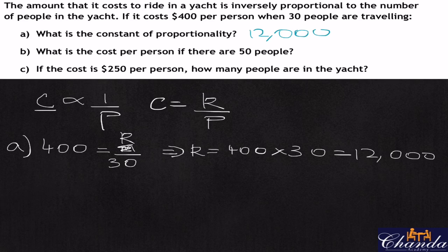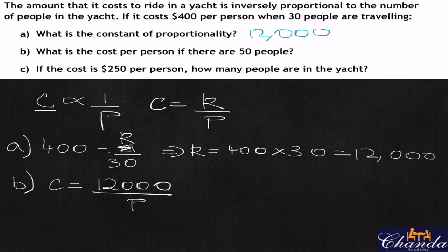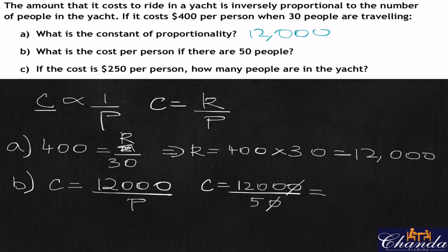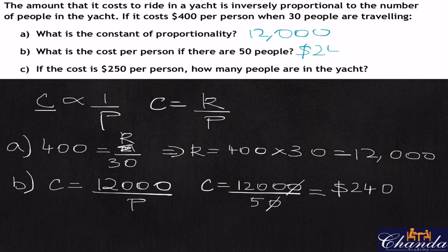If there are 50 people, what is the cost per person? Our formula is cost equals 12,000 divided by P. So cost equals 12,000 divided by 50. Zeroes get cancelled out, so 1,200 divided by 5 gives us $240. Therefore the cost per person with 50 people is $240.